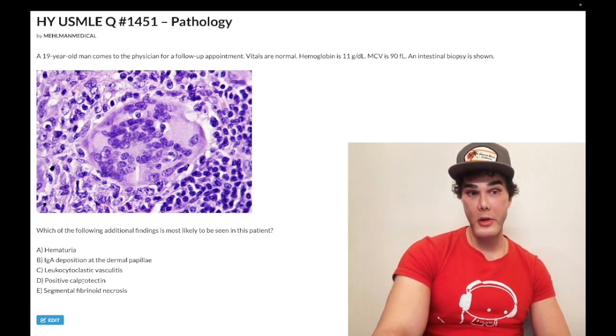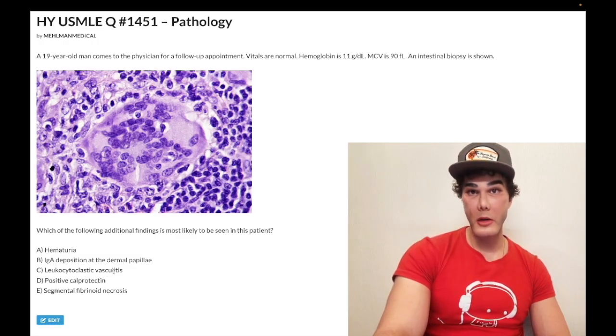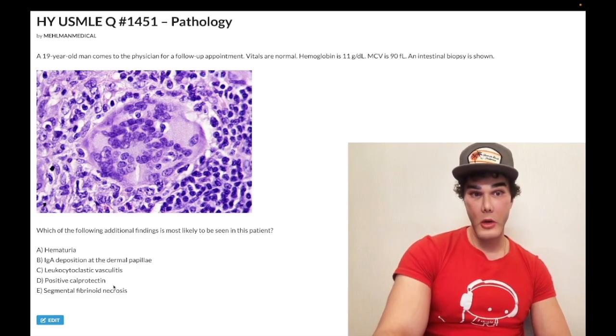So calprotectin, it's greater than 85% sensitive for IBD, but it's not necessarily specific. Sometimes you can get a positive with gastroenteritis, sometimes positive even with NSAID use, but it can be used to help differentiate IBD from things like IBS. Irritable bowel syndrome that's non-inflammatory. They will not tell you there's blood in the stool. They will not say anything about mucoid appearance of the stool. Vital signs will be normal almost always. So laboratory studies are normal for IBS. So positive calprotectin, you can see that in IBD.